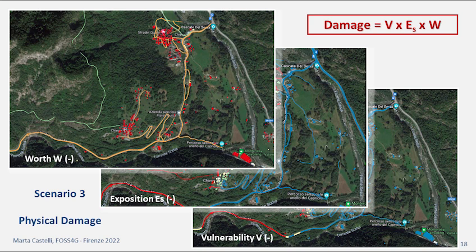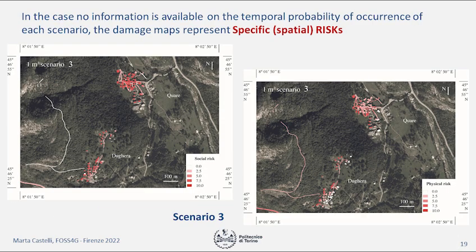Finally, we use all the datasets produced — value, exposure, and vulnerability — through overlay and very simple map algebra, combining the maps to define the damage. This can be done for both the physical and social aspects of the problem. In this case, where no information is available on the temporal probability of occurrence of the phenomenon, the damage map represents a risk map — specifically a non-temporal risk, because time is not included in the analysis.